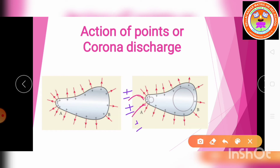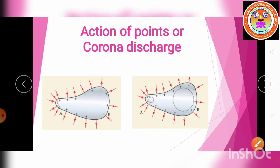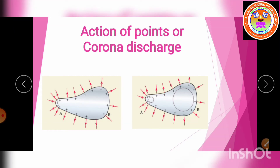The positive ions are repelled from the sharp edge and the negative ions are attracted toward it. The positive and negative charges neutralize, so the number of charges on the conductor is reduced. The positive charges are also repelled since positive repels positive.